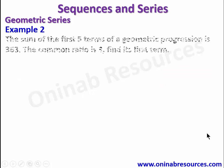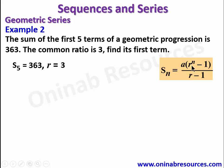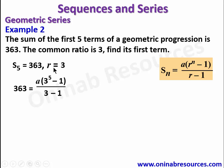We now go to Example 2. The sum of the first five terms of a geometric progression is 363. The common ratio is 3. Find its first term. We are given S5 = 363 and r = 3, and we want to find a. We use Sn = a(r^n - 1) / (r - 1), choosing this formula because r is greater than 1. So 363 = a × (3^5 - 1) / (3 - 1).